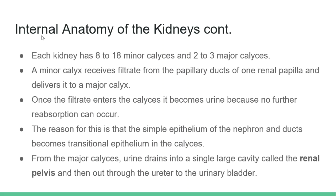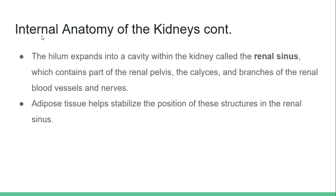From the major calices, urine drains into a single large cavity called the renal pelvis, and then out through the ureter to the urinary bladder. The hilum expands into a cavity within the kidney called the renal sinus, which contains part of the renal pelvis and calices, and branches of the renal blood vessels and nerves. Adipose tissue helps stabilize the position of these structures in the renal sinus.